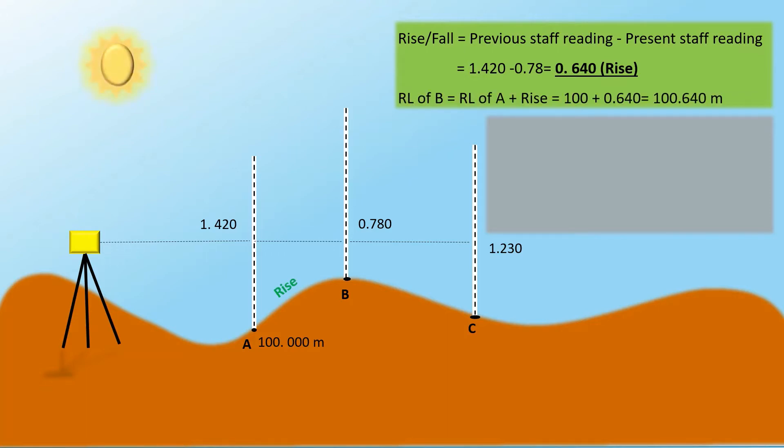Finally, RL of B is equal to RL of A plus rise which gives you 100.640 meters. Similarly, let us calculate RL of C using rise or fall method.